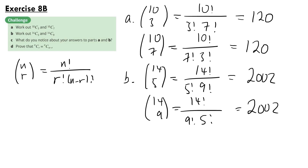Part C: what do you notice about your answers to parts A and B? Well, you can see that the two answers for part A are both equal, and the two answers for part B are also both equal. Using the NCR formula, we get the same numbers except in the denominator the two factorials are swapped around, which changes nothing. So our two answers are the same.